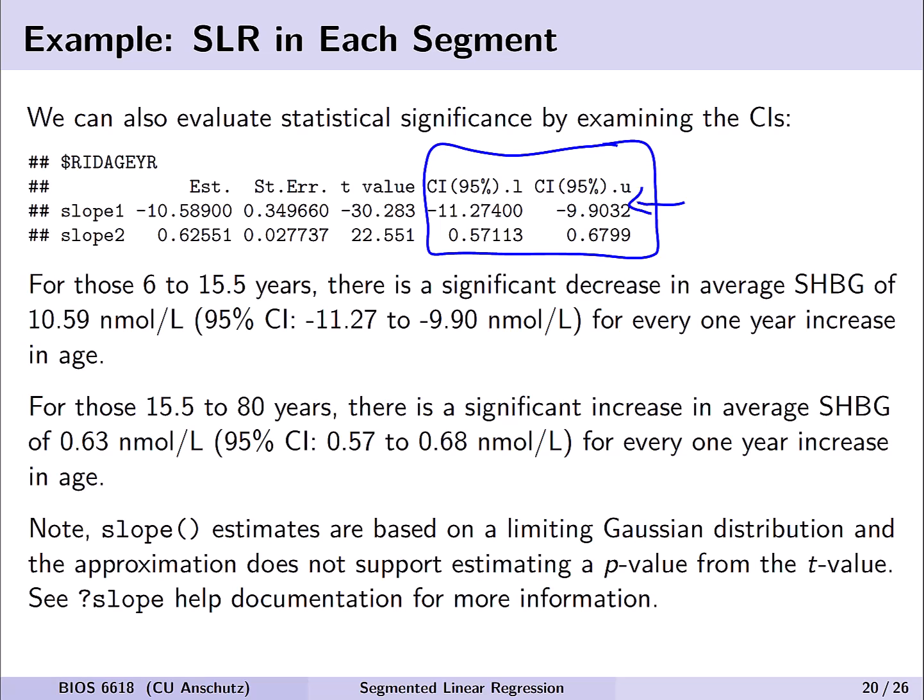You might think: since there's a t-value in the output, couldn't I calculate a p-value from it? The help documentation notes that the slope function makes an estimation based on the limiting Gaussian distribution, and that approximation may not support estimating p-values from the t-value, so it's best to interpret confidence intervals for statistical significance.